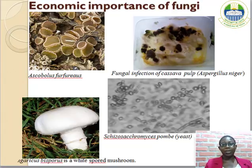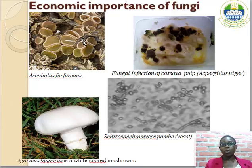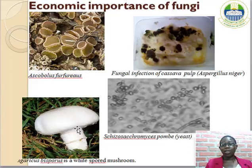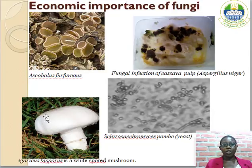Fungi have economic importance — they can be beneficial or harmful. For example, Ascobolus furfuraceus is a dung-loving fungus found growing on dung, breaking down macronutrients into micronutrients so that plant roots in that environment can absorb them. Aspergillus niger grows on leftover food such as eba and fufu that are not properly preserved. Agaricus bisporus is a nutritious kind of fungus — the mushroom commonly used as a delicacy in many parts of the world. Schizosaccharomyces pombe is used in fermentation for alcoholic beverages.